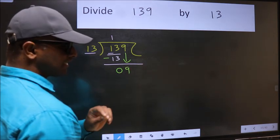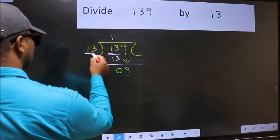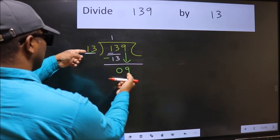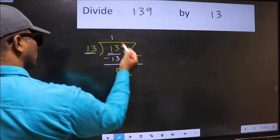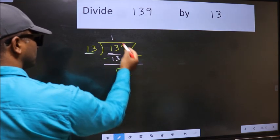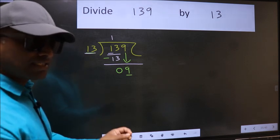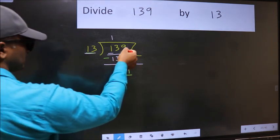And the mistake is this: here we have 9 and here 13. 9 is smaller than 13, so what many do is they directly put dot, take 0. Which is wrong. Why is it wrong? Because just now you brought this number down.